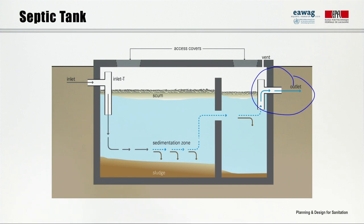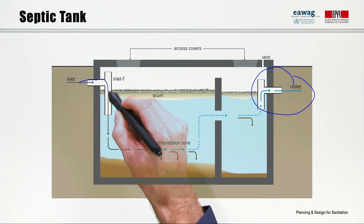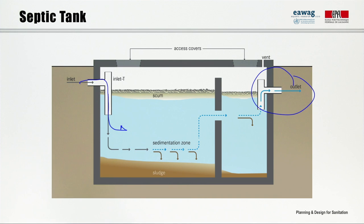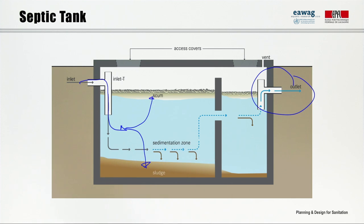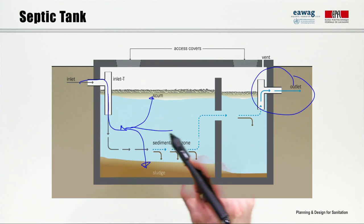Blackwater and greywater enter the tank through an inlet T. Settlable solids fall down to the bottom, where they accumulate as sludge. With time, the sludge undergoes some stabilization by anaerobic digestion, and it has to be removed every three to five years. Floatable substances move up to the surface, forming a scum layer. The effluent from the clear water zone in the middle flows out through an outlet T and is then typically infiltrated, for example in a leach field.